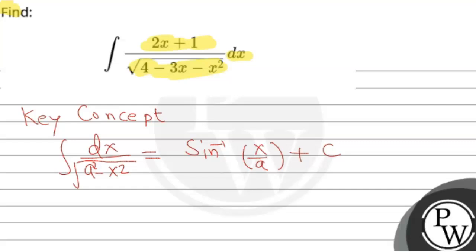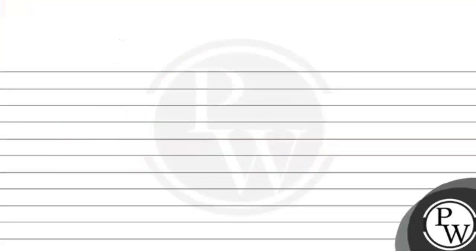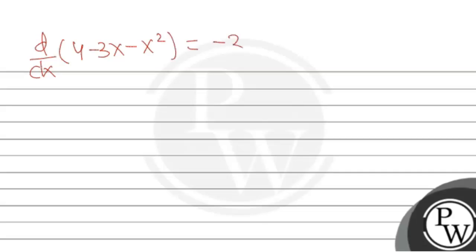Before we proceed, notice that the derivative d/dx of (4 - 3x - x²): the derivative of 4 is 0, derivative of 3x is 3, derivative of x² is 2x. So the derivative is minus 2x minus 3, or equivalently minus (2x + 3). We will try to make this type of expression appear in the numerator.